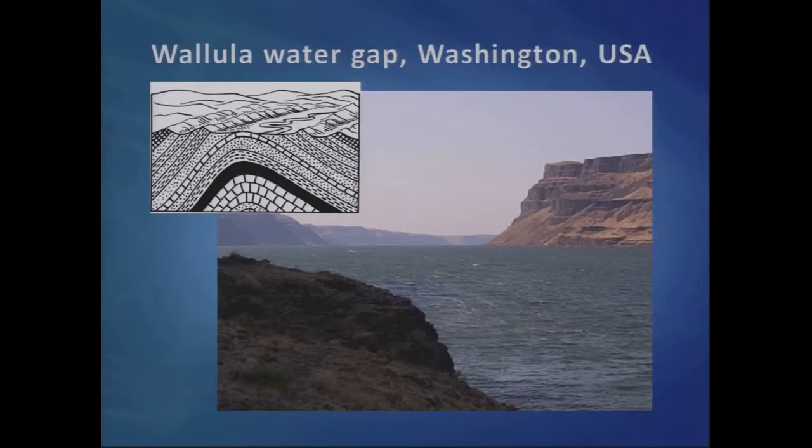The deepest water gaps you see in the world are in the Himalayas. There are 11 major rivers that start in the northern Tibetan plateau and then plunge south straight through the Himalayas in deep gorges. There's one that is almost four miles deep — about six kilometres — the Arun River flowing south past Mount Everest. Here's one flowing near Washington, USA, that has cut straight through an anticline, where sedimentary rocks have been pushed up in a ridge.